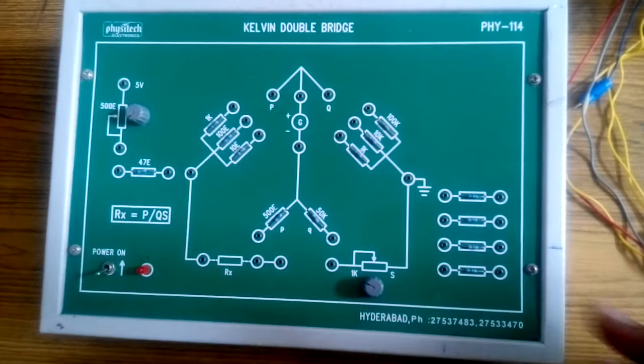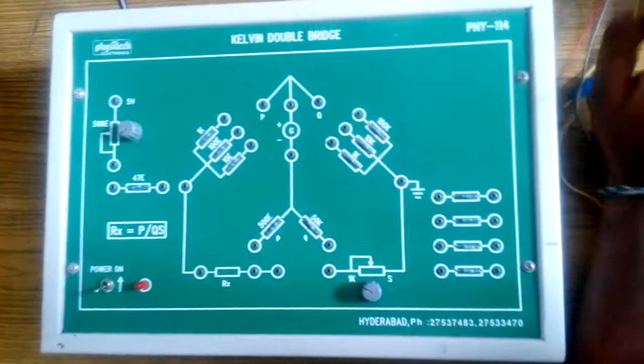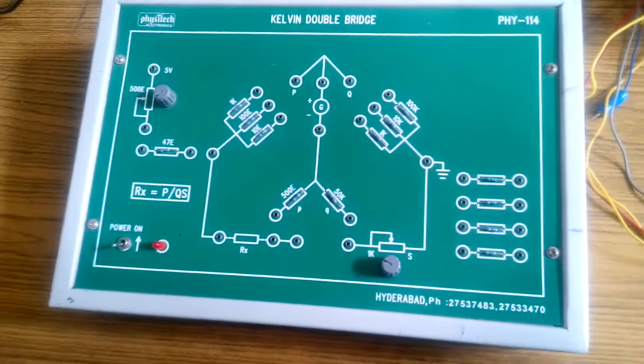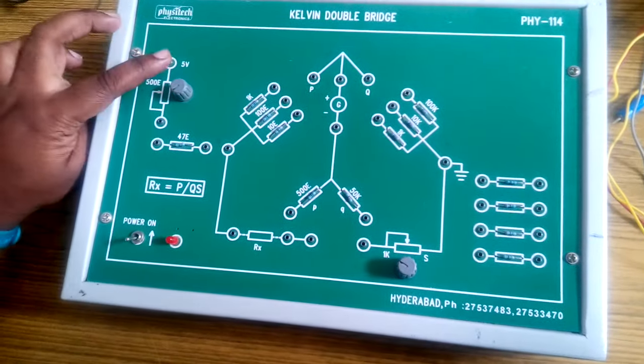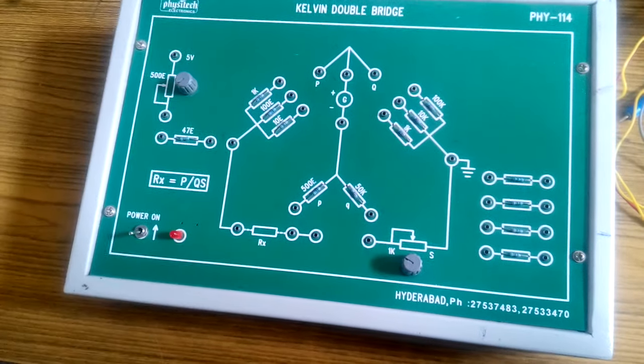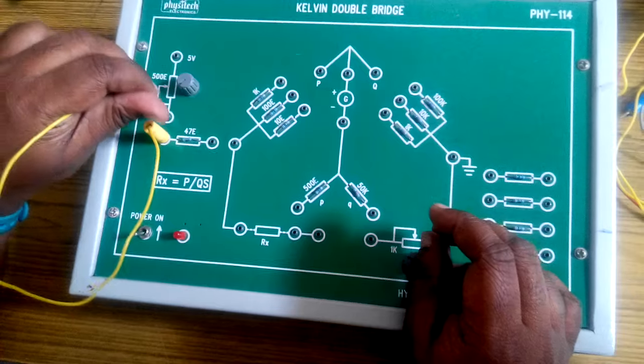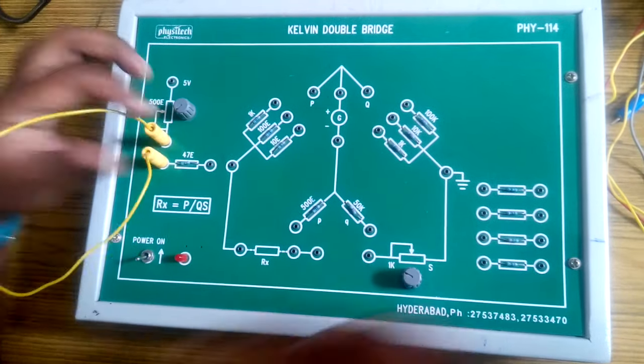For a Kelvin's double bridge circuit, we will be giving DC current as the input. So you have a voltage source over here. From the voltage source we are giving a current. The connections are shown over here.